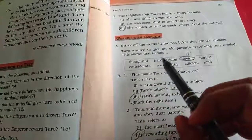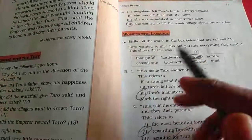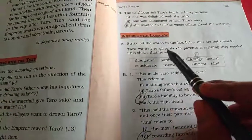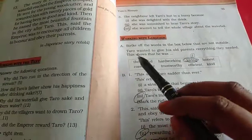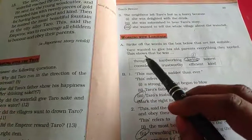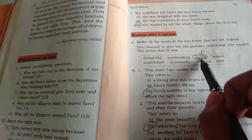lot of words are not suitable for the sentences. Okay, only one is suitable for that. Which one? Tharu wanted to give his old parents everything they needed. This shows that he was loving, that he was loving.